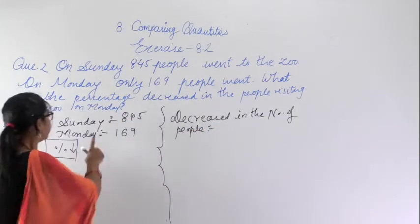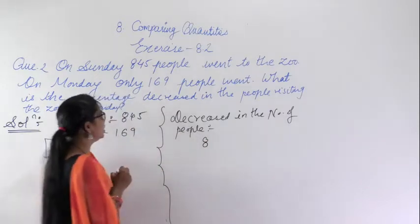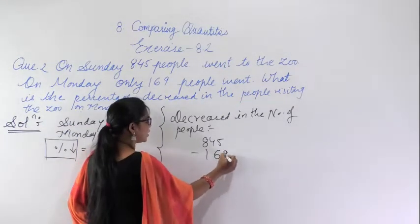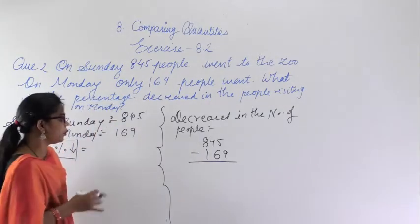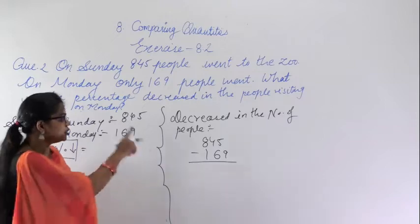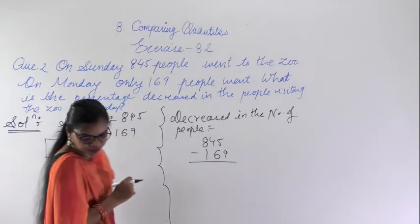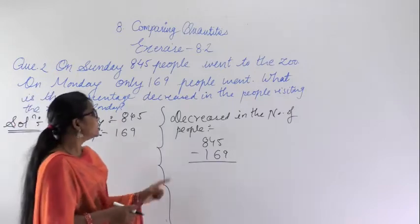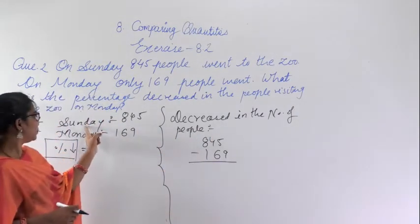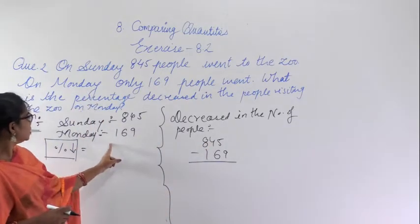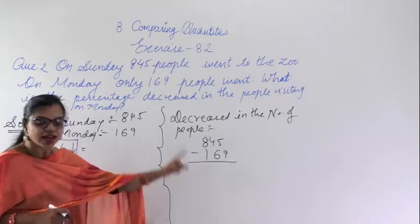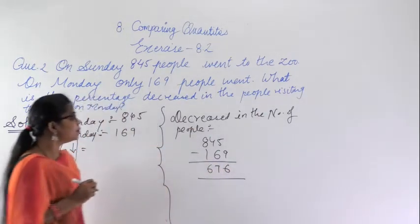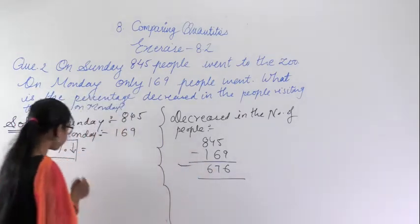On Sunday, 845 people went to the zoo and on Monday, 169 people went. If we subtract Monday's count from Sunday's count, we get the decreased number of people. So 845 minus 169 equals 676. These 676 are the decreased number of people who did not visit on Monday.